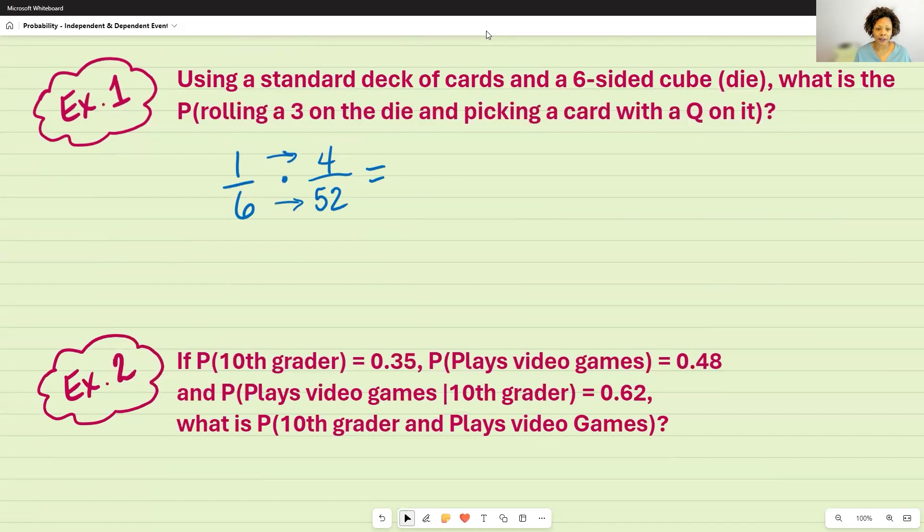You can also simplify this if you wanted to. You could have cross-simplified the four and the six, because both of those are divisible by two. Or you can just go ahead and multiply it across. If you multiply it across, you're going to have 4 out of 312.